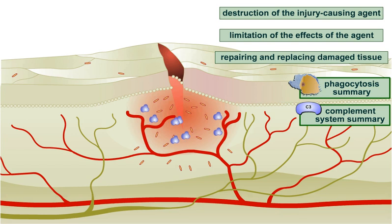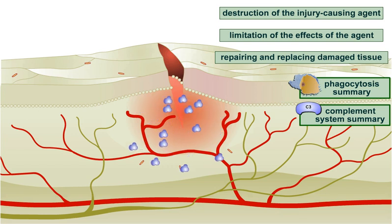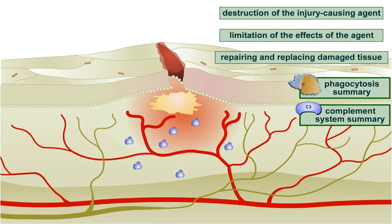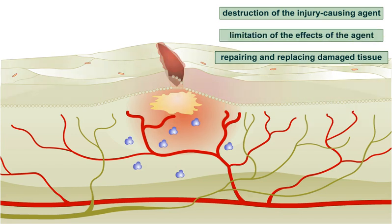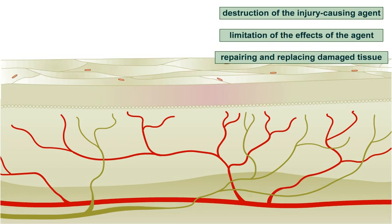The migration of phagocytes and other factors to the site of injury usually results in the destruction of microorganisms. Phagocytes directly attack the microorganisms, but other components of the body's defense systems, such as the complement system, are also involved. Even if destruction of the injury-causing agent is not possible, inflammation helps to limit the effects of the agent by confining the agent and its byproducts to the site of injury through the clotting that occurs during tissue repair.